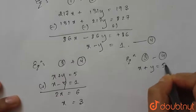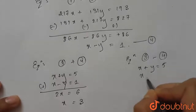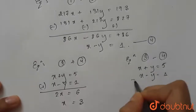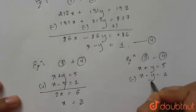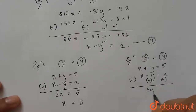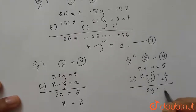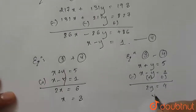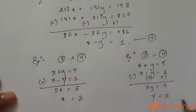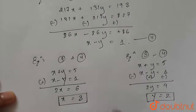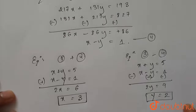Next, let's subtract equation 4 from equation 3. We have x + y = 5 minus x - y = 1, so 2y = 4, therefore y = 2. So we get the values x = 3 and y = 2, and this is the required answer.